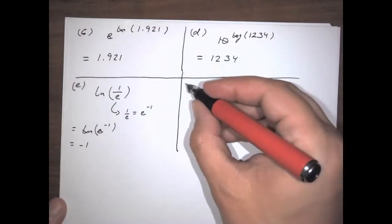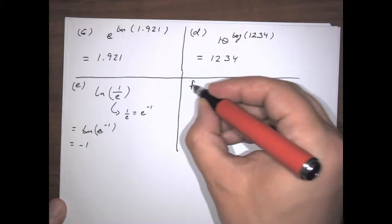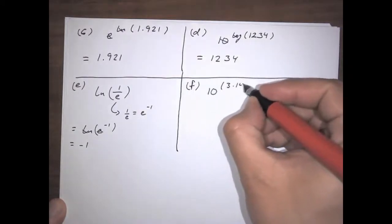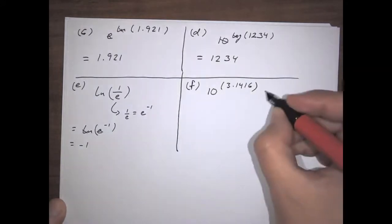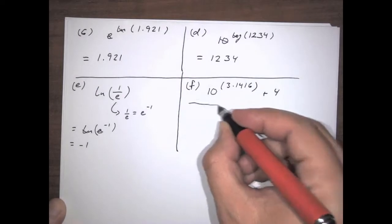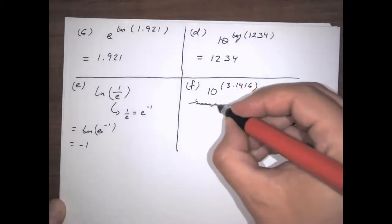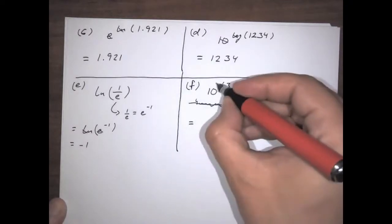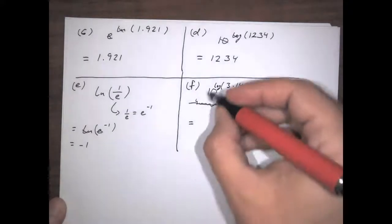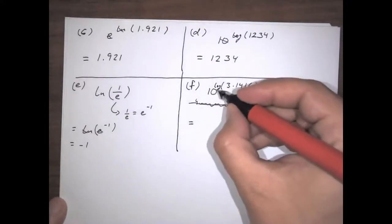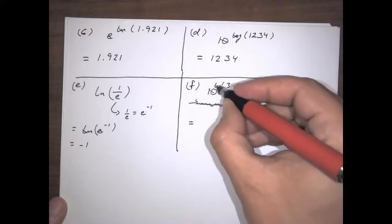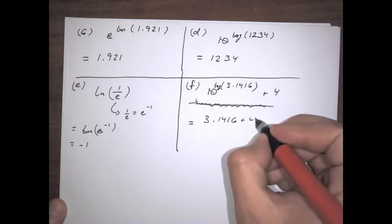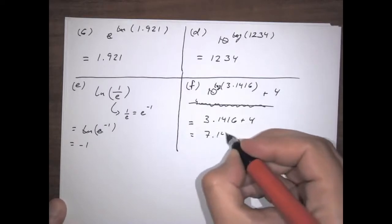And if we have something like 10 to the power of log of 3.1416, plus 4 — we would evaluate that just as we'd evaluate any complicated expression, in pieces. Same base, they cancel, and we have 3.1416 plus 4 equals 7.1416.